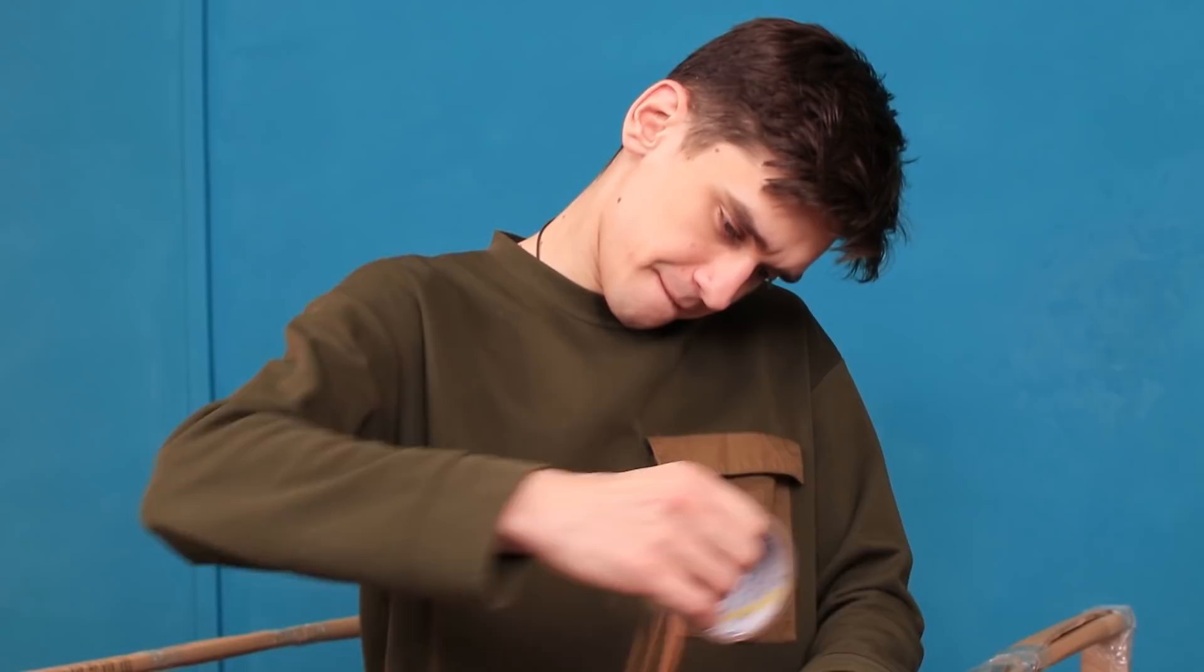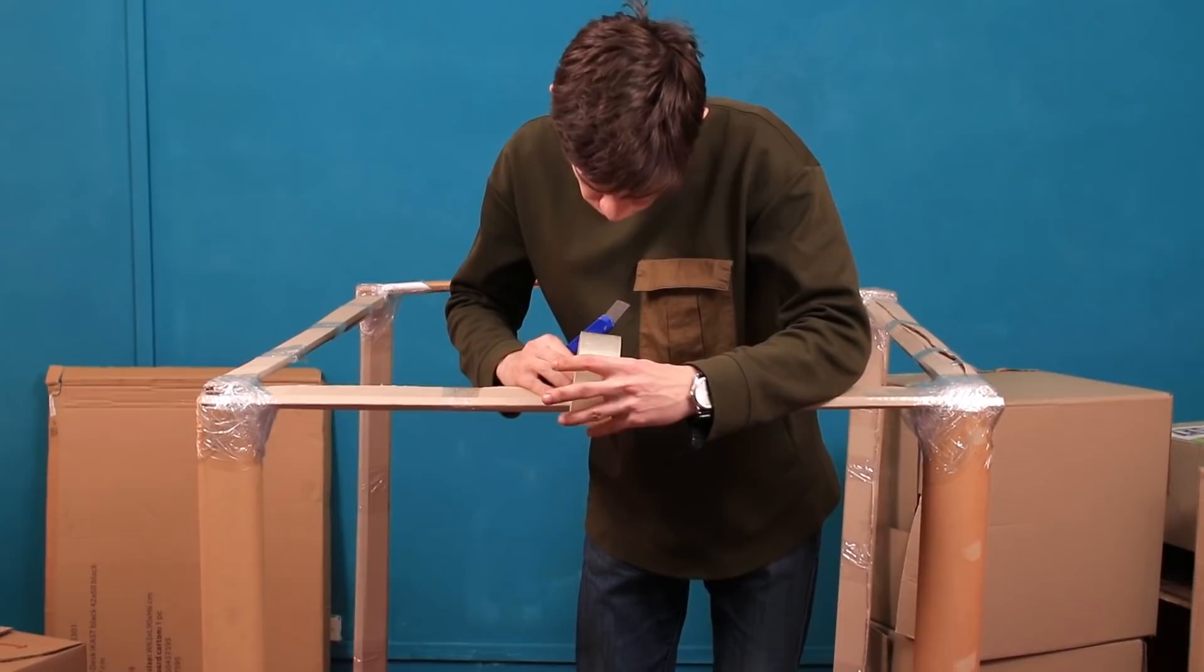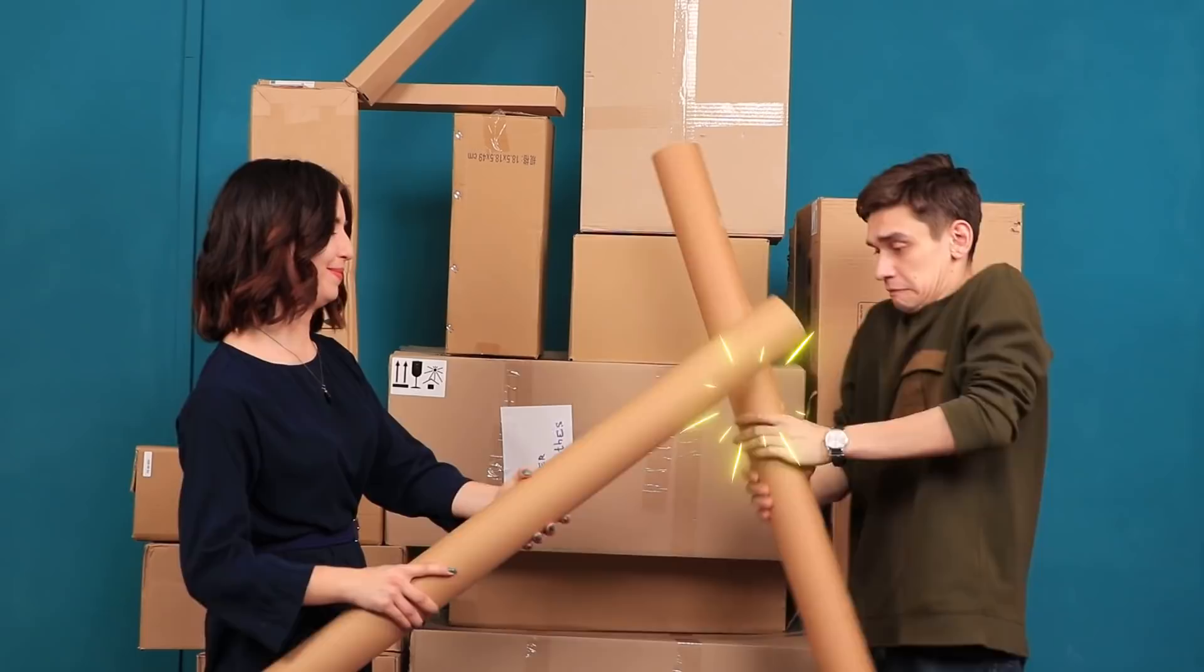First, we build a frame! To make it more stable, we roll thick strips of cardboard into stands and fasten them to each other using tape! It's important to securely fasten the corners so the house doesn't fall apart before moving in! And wrap tape around the stands a few times so the cardboard doesn't open up!